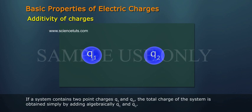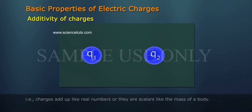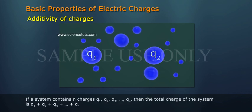That is, charges add up like real numbers, or they are scalars like the mass of a body. If a system contains n charges q1, q2, q3, and so on to qn, then the total charge of the system is q1 plus q2 plus q3 plus and so on plus qn.